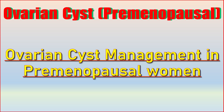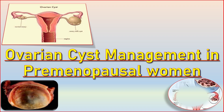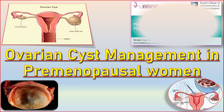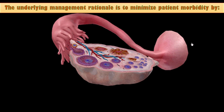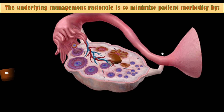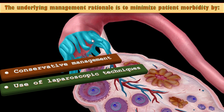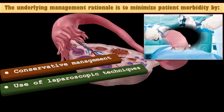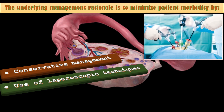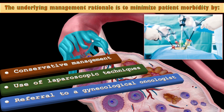Management of suspected ovarian masses in pre-menopausal women — the RCOG guideline is our topic today. The underlying management rationale is to minimize patient morbidity by conservative management where possible, use of laparoscopic techniques where appropriate thus avoiding laparotomy where possible, and referral to a gynecological oncologist where appropriate.